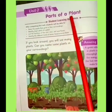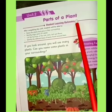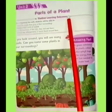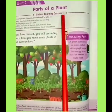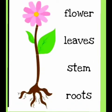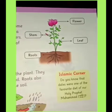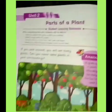Parts of a plant means paudhe ke hisseh. In parts of a plant, page number 6 to 8, we will discuss about root, stem, leaves and flower. Let us start from page number 6.